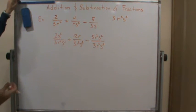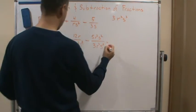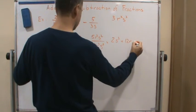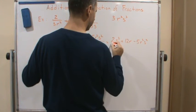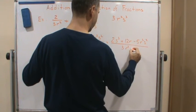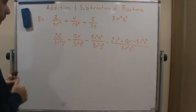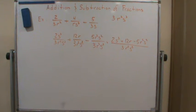Now I just have to use the rules that I learned earlier that I talked about earlier about adding and subtracting fractions with like denominators. So I'm just going to add and subtract across the top and I'm going to keep the bottom. So this is going to equal 2s³ + 12r - 5r²s² over 3r²s³. Now we're finished because we can't simplify that any further than we already have.